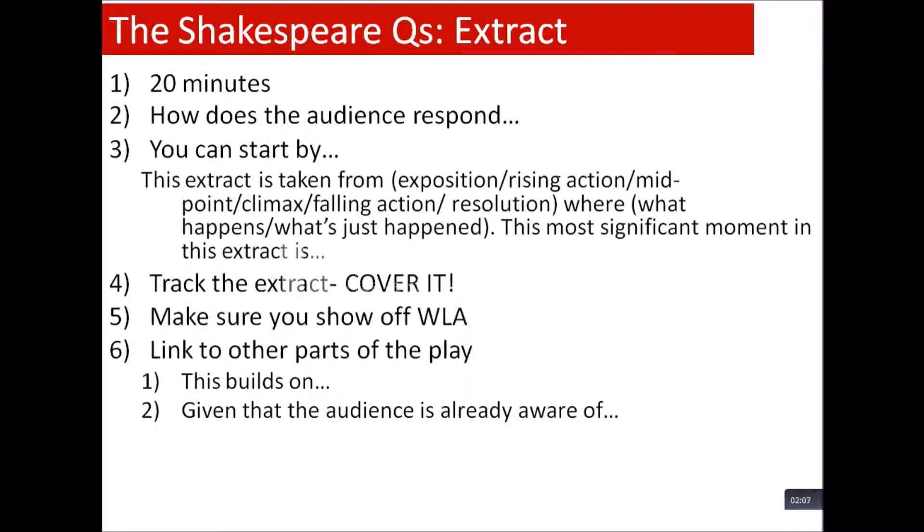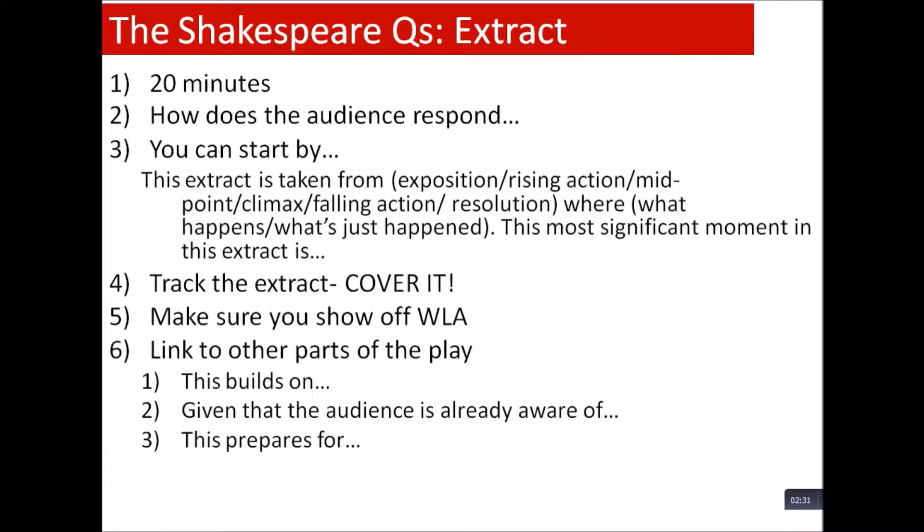Another way of linking to previous parts of the play is to say: 'given that the audience is already aware of...' That's a great one for Romeo and Juliet — already aware that they're going to die. For Othello: already aware that Iago is acting against Othello, already aware of Roderigo's love, already aware of society's disgust at the idea of the marriage. Anything like that is what you can refer to.